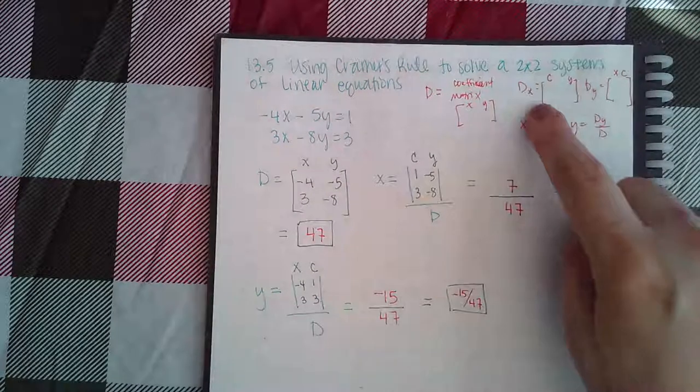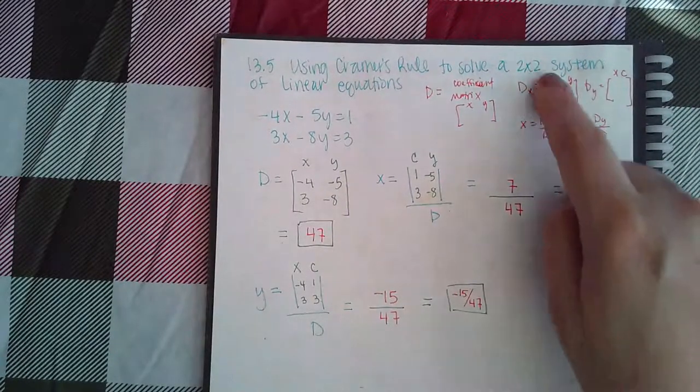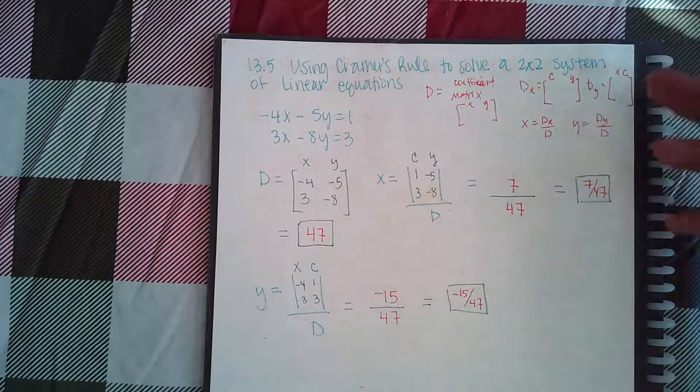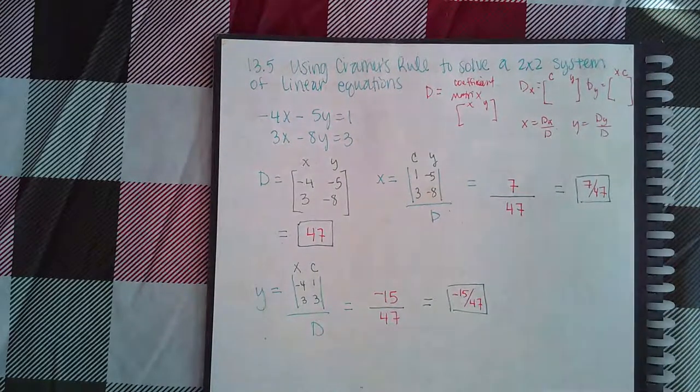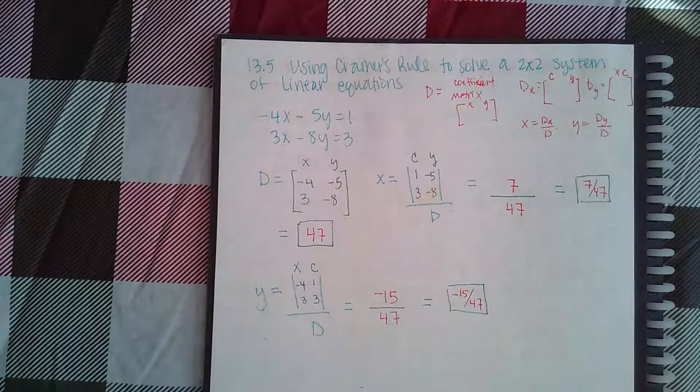But finding Dx by replacing the x column with the constants, Dy by replacing the y column with the constants, and even in a 3x3, z would get replaced with the constants. That whole system, the Cramer's rule, is still applicable to the 3x3 matrix, which is more than likely the next topic.